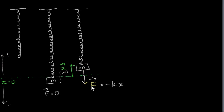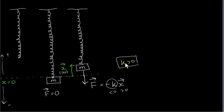F is opposite in direction to x. Here x is positive, and minus k is always negative — k is the spring constant, a positive number that depends on the material the spring is made of. So if we put a minus sign in front of k, we always get a negative scalar. A negative scalar times a positive vector gives us a negative vector, so F points downwards. This makes sense because the mass wants to return to its equilibrium position at x equals zero, so the force vector always points towards the equilibrium position.